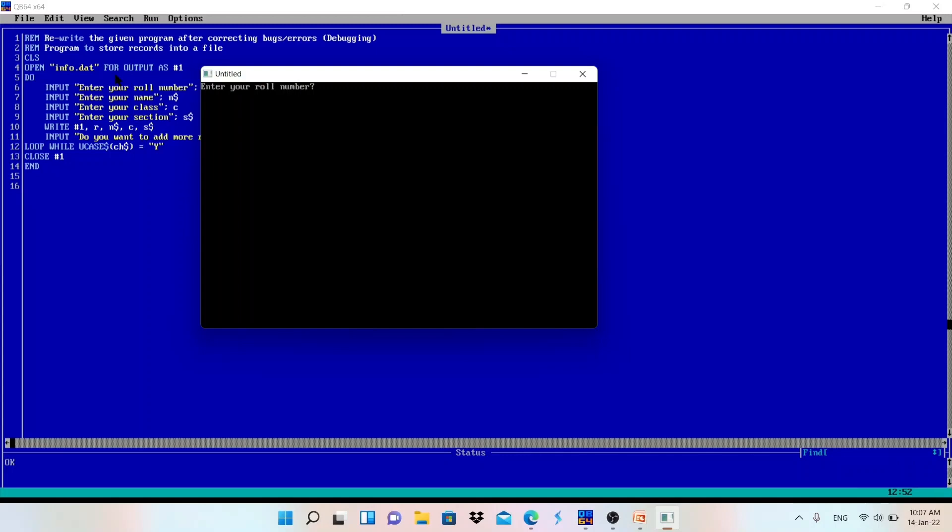We have used here output mode, so this info.dat file will be created and store the data into that file. So roll number, I will enter 1. Name, I will enter this channel name, I Will Make Easy. Class 10.